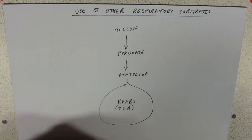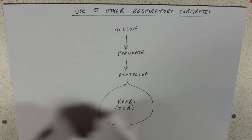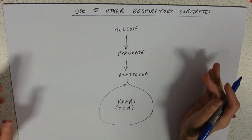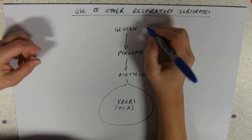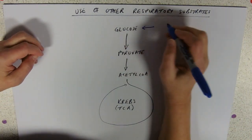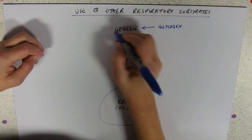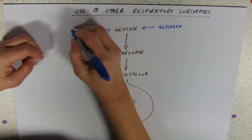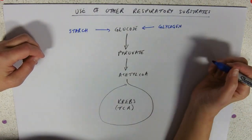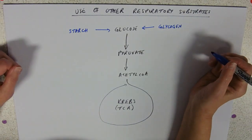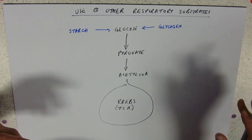Obviously, if you're lacking a bit of glucose in your bloodstream, there are other ways in which you can get glucose. For us, we could break down glycogen. If you're a plant, you can break down your starch reserves, and they will all release glucose. And of course, where you get your glycogen and starch from is from diet.